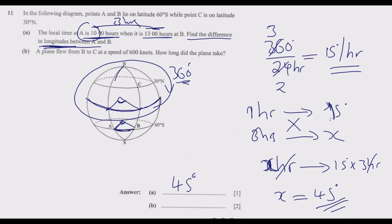Now question B: A plane flew from B to C at a speed of 600 knots. How long did the plane take? Let me clean up the diagram so it's clearer. The plane is moving from B to C along the great circle, which is the longitudes.